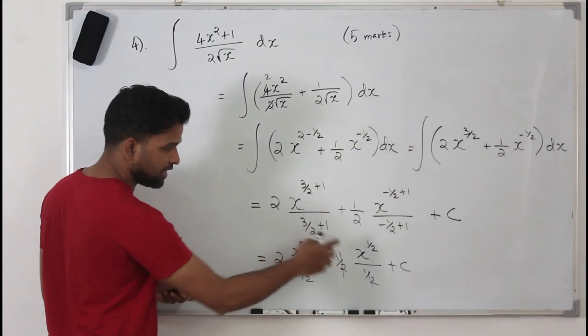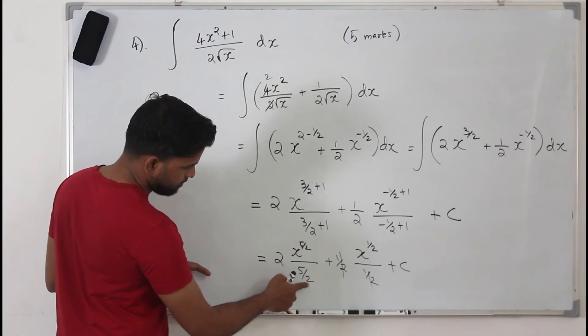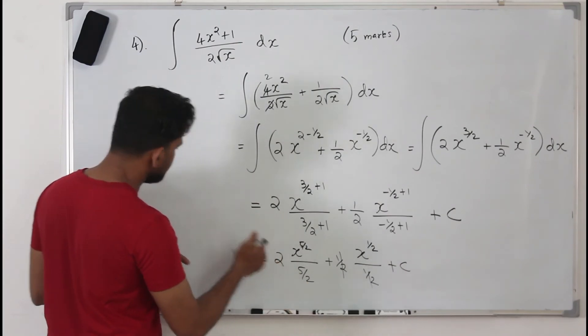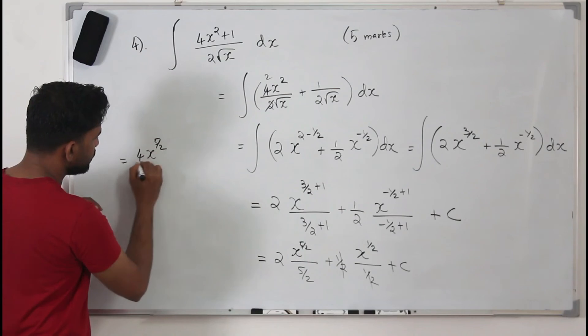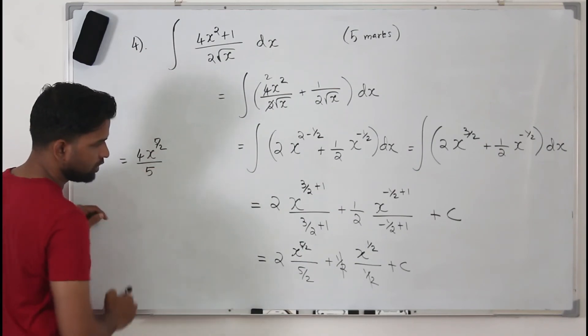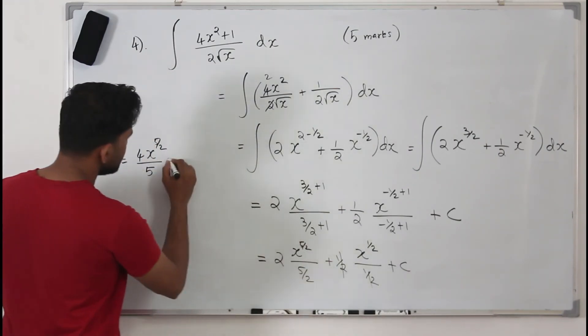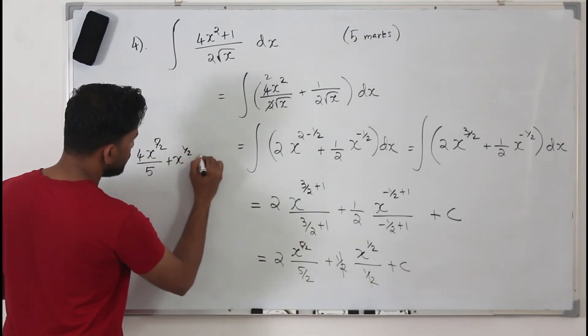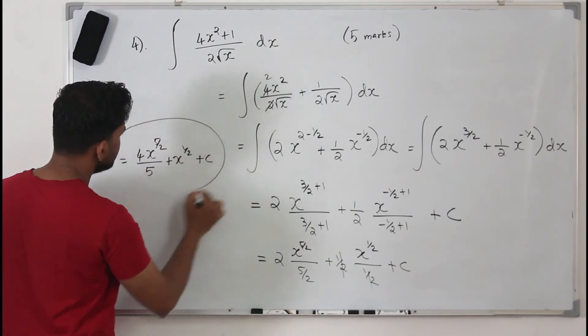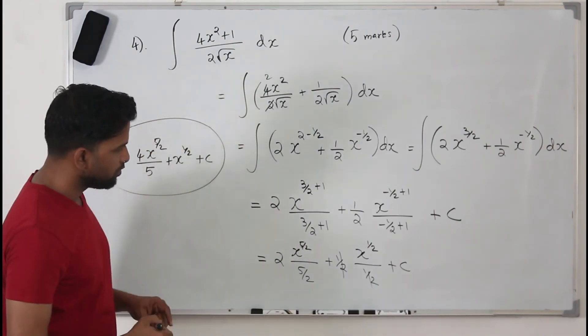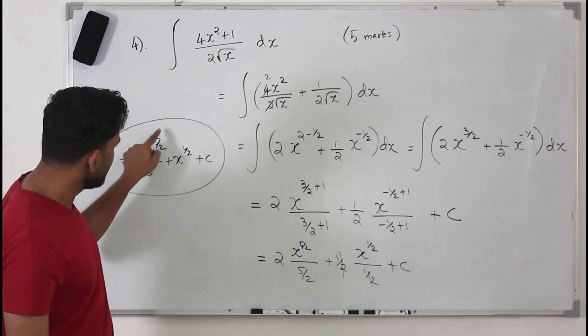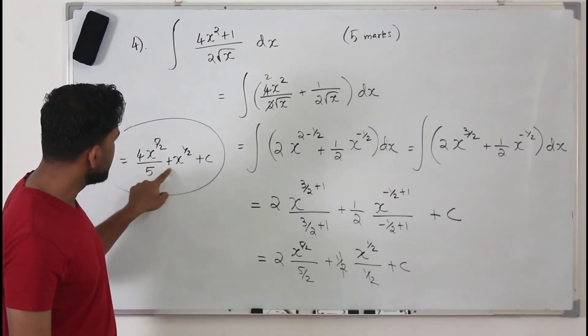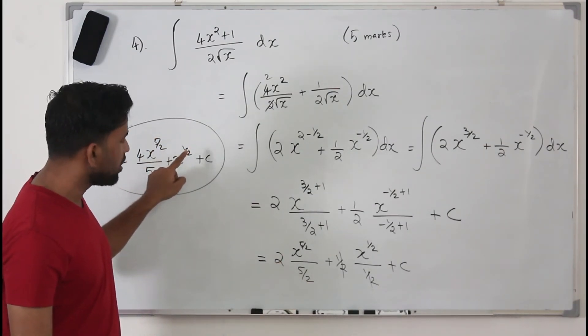If you want to tidy up this, tidy this up a little bit. Your 2 comes up, so it becomes 4 x to the power 5 by 2 by 5 and plus x to the power half plus c. Because here there is no constant, it's cancelled already. So 4 x to the power 5 by 2 by 5 plus x to the power half plus c.